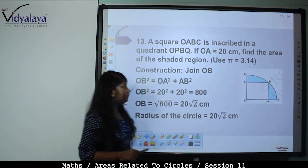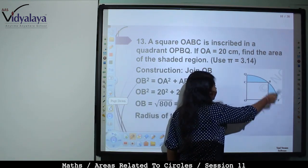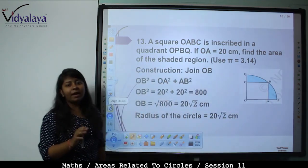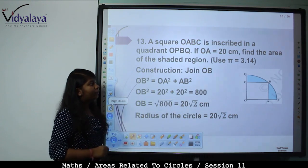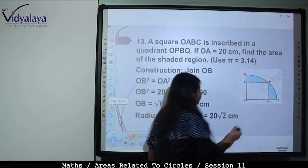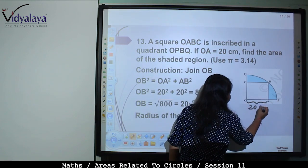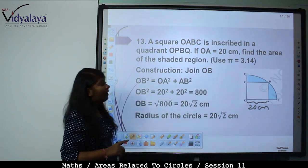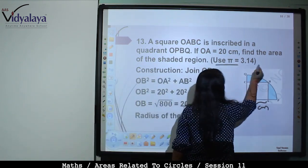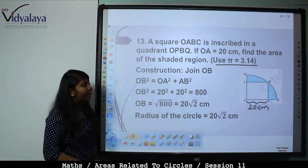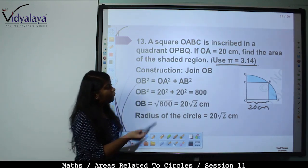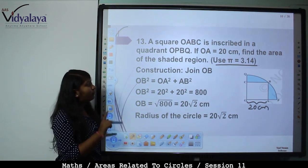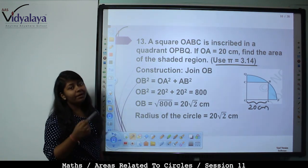Next: Square OABC is inscribed in a quadrant OPBQ. OA = 20 cm. Find the area of the shaded region. Use π = 3.14. Strategy: Area of quadrant − Area of square. Construction: Join OB.